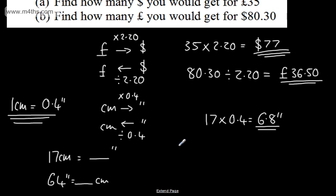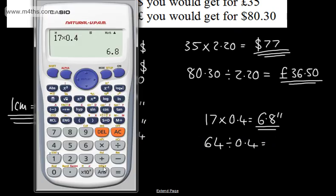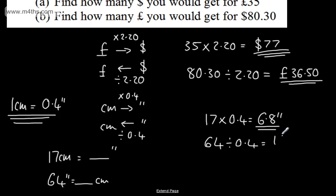Now we want to go from 64 inches back to centimetres, so we'll be dividing by 0.4, and this value is going to get larger. So 64 divided by 0.4 gives us 160. So that's 160 centimetres.